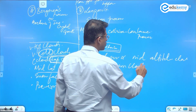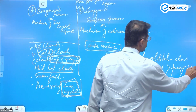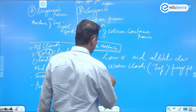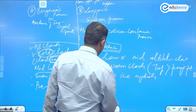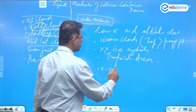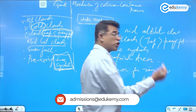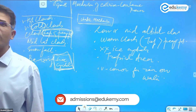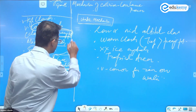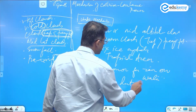The Langmuir-Simpson Process happens for low and mid-altitude clouds — warm clouds. A warm cloud is one where the temperature is more than the freezing point, so such clouds will not have ice crystals. This process is very common for tropical areas and for rainfall over the oceans and seas.